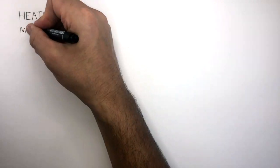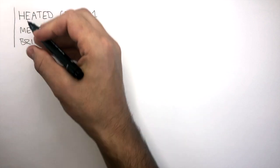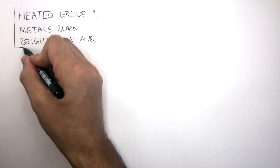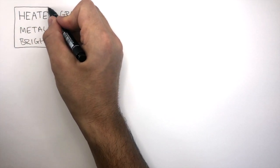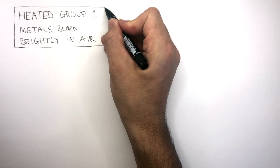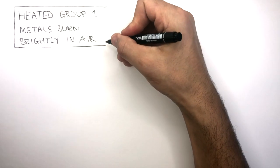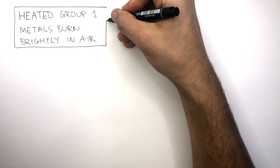Heated group 1 metals burn brightly in air. It's important to note the difference that if an alkali metal is left in air, it reacts very quickly as the outer layer is tarnished. However, if an alkali metal is heated and then placed in pure oxygen, it will burn brightly.